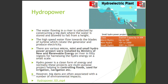Next is hydropower. Water flowing in a river is collected by constructing a big dam where it is stored and allowed to fall from a height. The high-speed water flow rotates the blades of a turbine, which rotates the generator and produces electricity. Various micro, mini, and small hydropower projects have been installed by the Ministry of New and Renewable Energy in hilly regions. Hydropower is a clean form of energy, and these projects are often multipurpose — helping in flood control, irrigation, and navigation. However, big dams are often associated with environmental impacts, for example the Sardar Sarovar Dam and the Narmada Bachao Andolan movement.